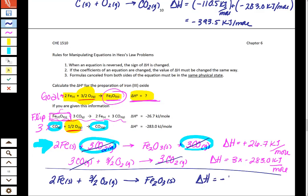And your delta H you should end up with negative 822.3 kilojoules per mole.